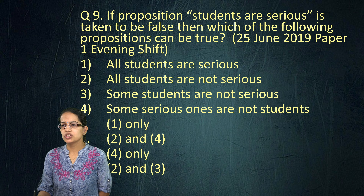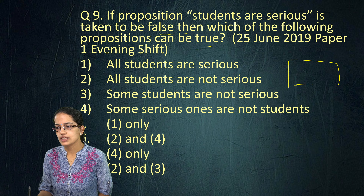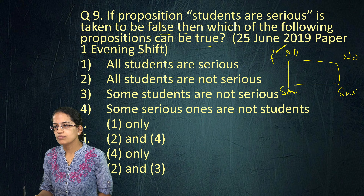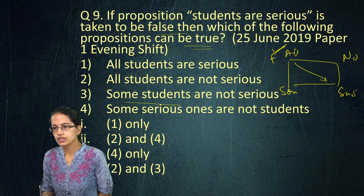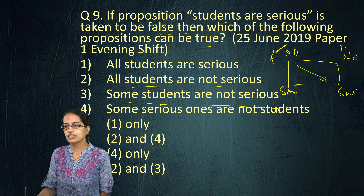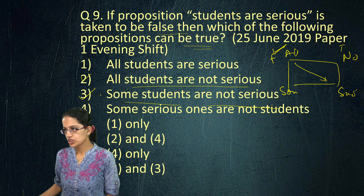The next question: if the proposition 'all students are serious' is false, then which propositions can be true? Using the square of opposition with all, no, some, and some-not: if 'all students are serious' is false, then 'some students are not serious' would be true, and 'all students are not serious' would also be true because when the 'all' form is false, the contradictory is true. So options two and three are the right answers here.